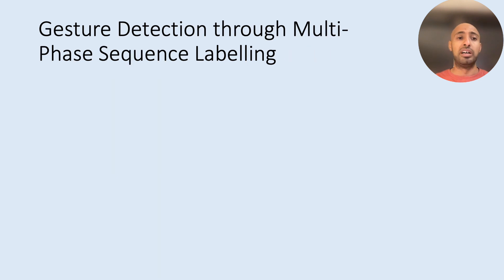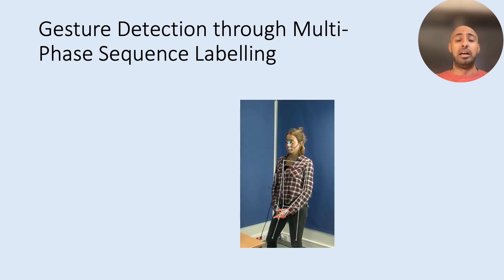So we start our approach, the pipeline of our approach by estimating the body pose of participants. So our gesture detection approach is based on the visual input, specifically on the skeletal input. Then we use spatial temporal graph convolutional networks on the constructed spatial temporal graphs from these body joints over multiple frames.